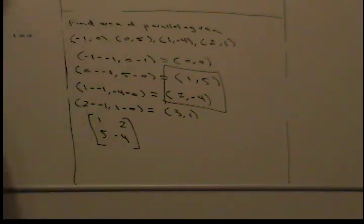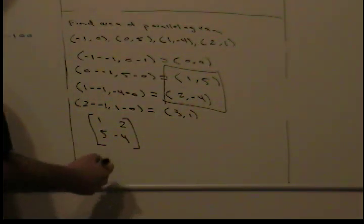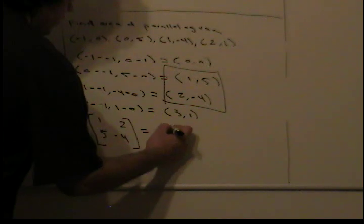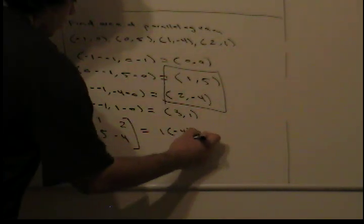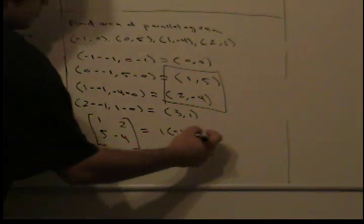This is a 2 by 2 matrix, so the determinant is just AD minus BC. So, the determinant of this is simply 1 times -4 minus BC, which is 2 times 5.